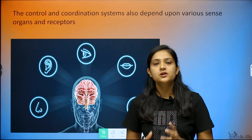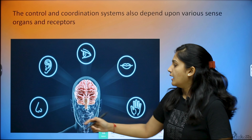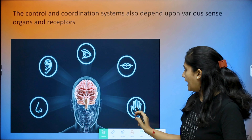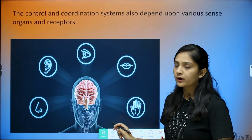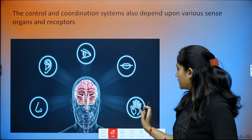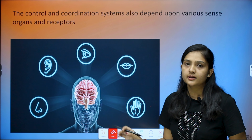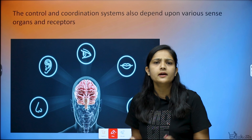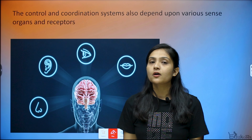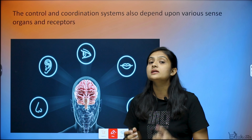There are five sense organs present in our body for control and coordination: the nose, ear, eye, tongue, and skin (represented by the hand). Each sense organ has cells — one cell or a group of cells — that receive stimuli. These are called receptors.